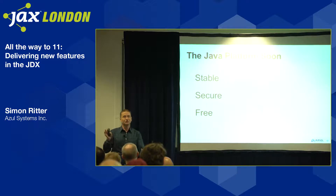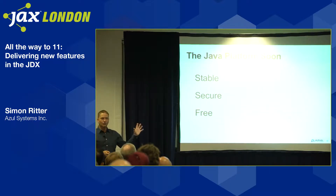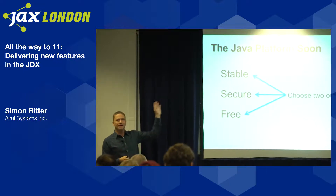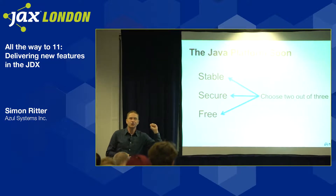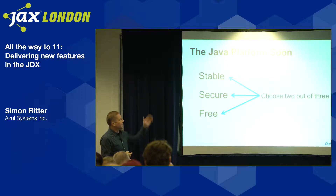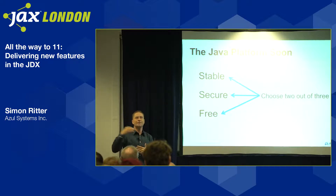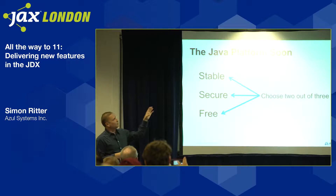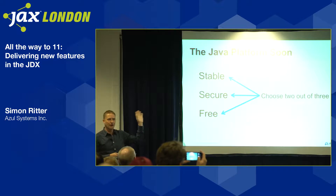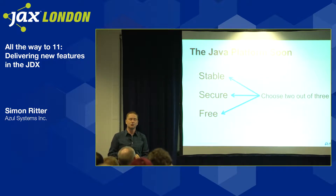So Java is still stable, secure, and free — but now you have to choose two out of three. If you want stable and free, you may sacrifice security because you'd stay on JDK 8 without patches after January. If you want secure and free, you can upgrade every six months but you're giving up stability because there may be breaking changes. If you want stable and secure, you're giving up free — because that requires a commercial support contract for guaranteed updates beyond six months.